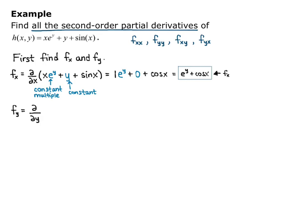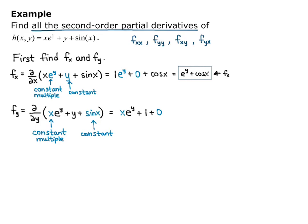Now for f sub y: the partial derivative with respect to y of x times e to the y, plus y, plus sine x. Here x is a constant multiple and sine x is just a constant. The derivative of e to the y is e to the y, so we get x times e to the y, plus 1 (the derivative of y), plus 0 (the derivative of the constant). So f sub y equals x e to the y plus 1.